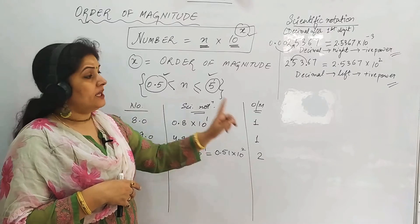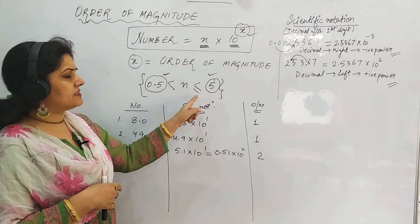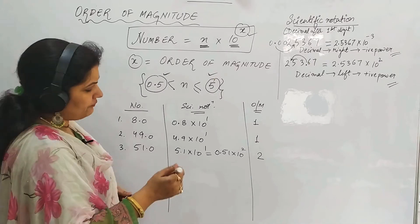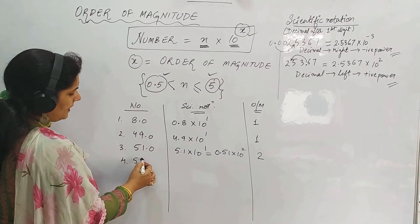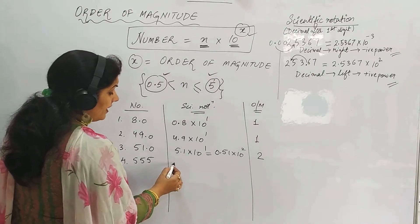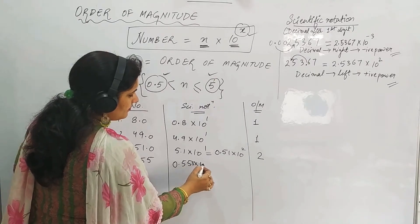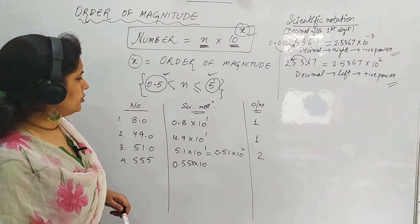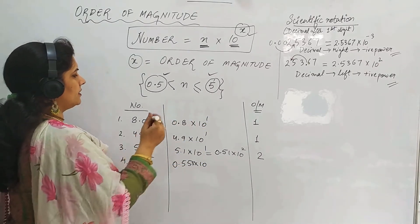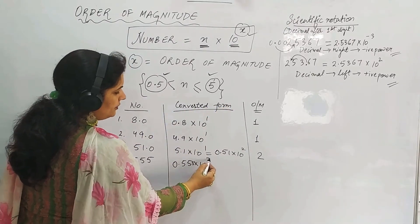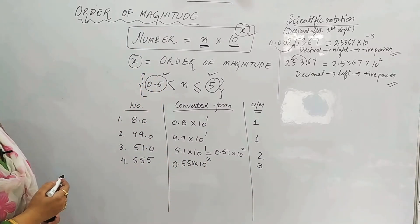The number should be greater than 0.5 and less than or equal to 5. 49's order of magnitude was 1, but as soon as it becomes 51, the order of magnitude becomes 2. All numbers must be converted this way. Next, take 555 — tell me the order of magnitude. Because we cannot keep it as 5.55 (greater than 5), we convert to 0.555 × 10³. Order of magnitude is 3.